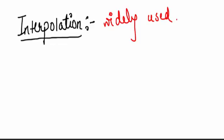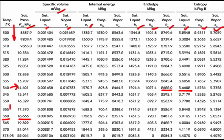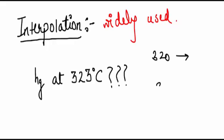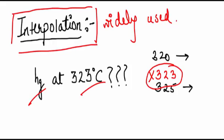Now the second important thing in a steam table or even in Mollier chart is interpolation. It is widely used, so let's see why. In the steam table you can see that 320 degrees and 325 degrees is given. So you can get properties at these temperatures, but what if you have to find hg at 323 degrees Celsius? You have 320, you have 325, but you don't have 323 in the table, and you have to find values at it. Then the method of interpolation is used.